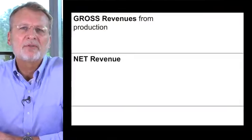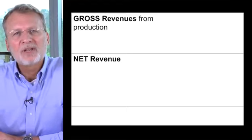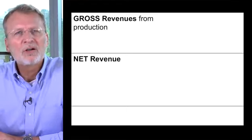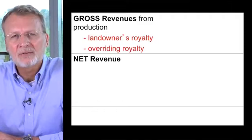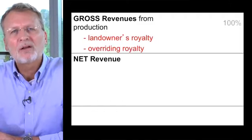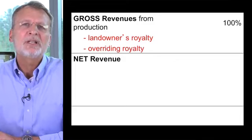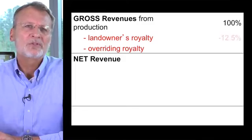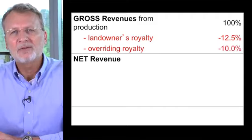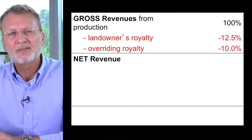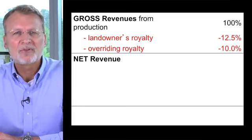So, how much of the revenues from an oil and gas well does a working interest owner ultimately receive? Consider this simple example in which the working interest owner of a producing well owes a royalty to the mineral rights owner and an overriding royalty to a second interest owner. The gross revenues from the well are 100% of the sales of oil and gas produced. From these, the mineral rights owner is paid their royalty, which is commonly about an eighth or 12.5% of the revenues. The overriding royalty interest is also paid, which in this example is 10%. That leaves the net revenues from the well at 77.5% of the gross revenues.